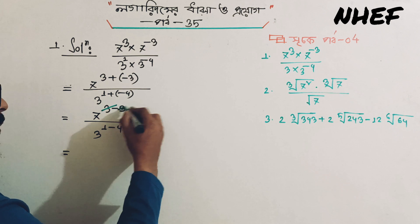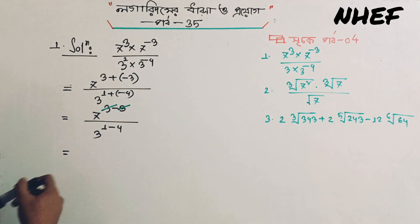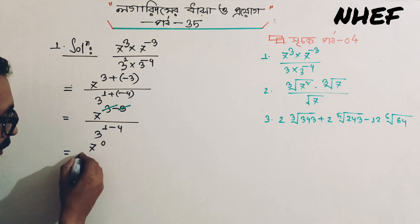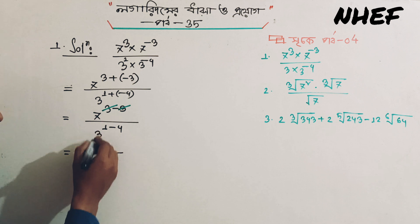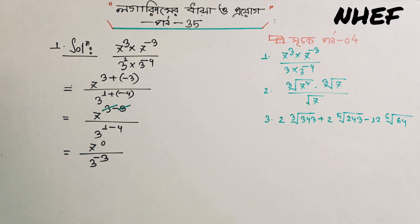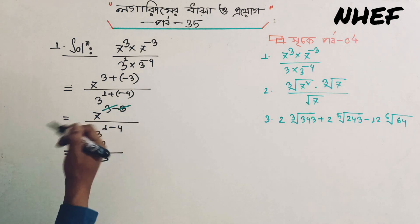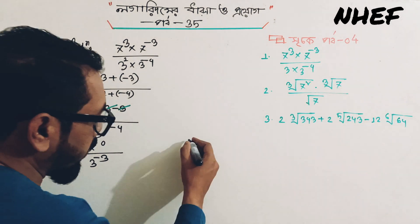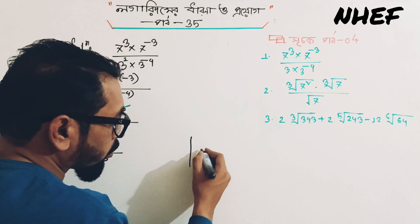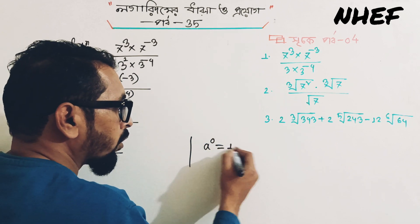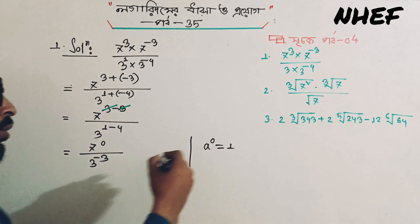We can write it as 7 to the power 0 divided 3 to the power minus 3. So 4 to the power 0 is minus 3. We can write it as a to the power 0 is equal to 1.